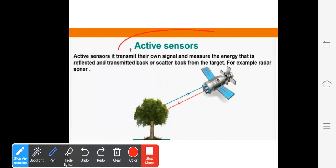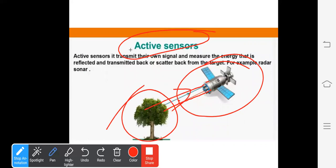Active sensors. This is your sensor. This is radiation. This is reflected. We have to record it. This is the external source. That is known as active sensors.